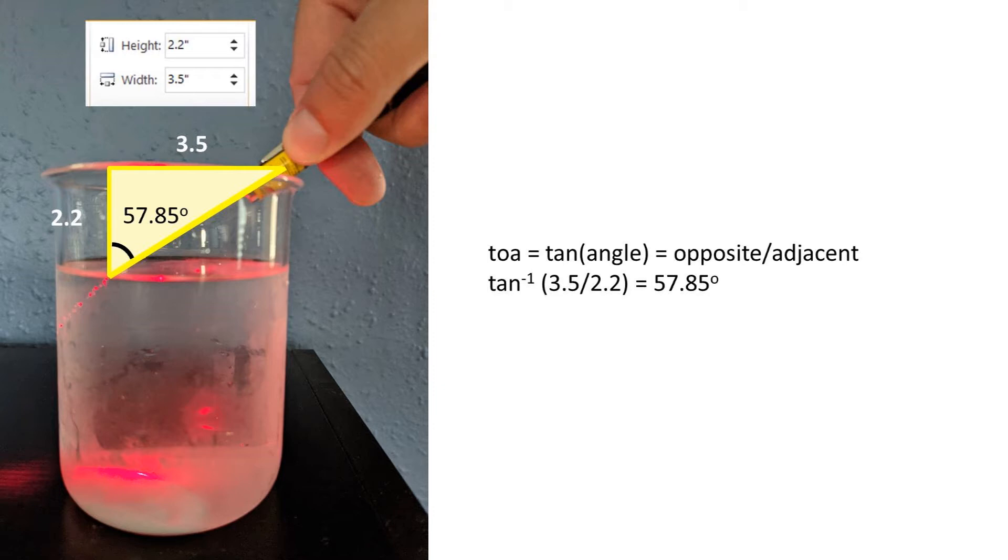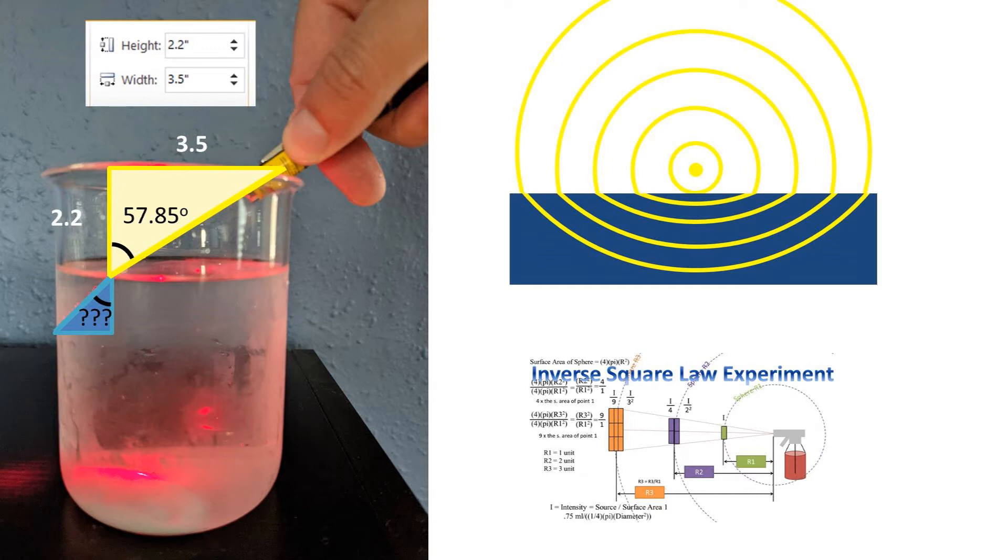This is normal to the water surface. We want to find the angle from the vertical line to the beam of light below the water surface. So first, what is going on? Well, if you recall from my inverse square law video, light from a source travels outwards from the source in the shape of a sphere.